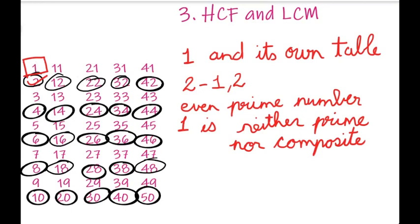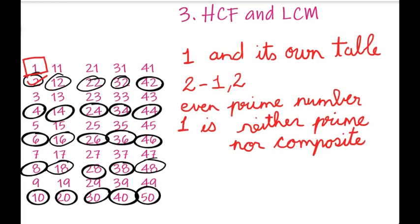2 is prime. Now we check 3. 3 comes in 1's table and its own table only — we have only 2 factors of 3. So 3 is a prime number. Continuing through the list: 4 is not a prime number. 5 is a prime number because it comes in 1's table and its own table. 7 is also a prime number.